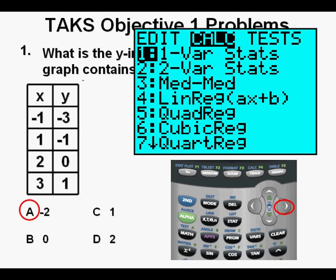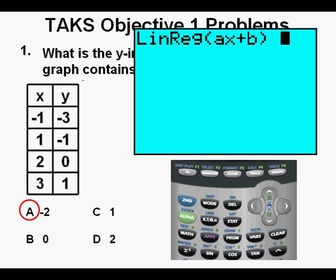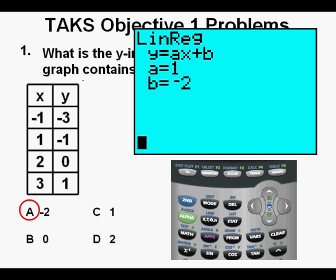Then arrow once to the right for the CALC submenu. Since we're finding the equation of a line, we arrow down to choice 4, Linear Regression. Press ENTER, press ENTER again. a equals 1 and b equals negative 2 mean that the equation of this line is y equals 1x plus negative 2, because a is the slope and b is the y-intercept.